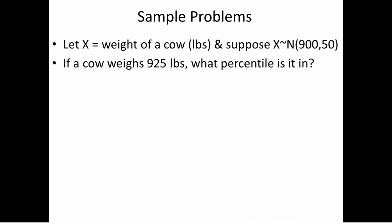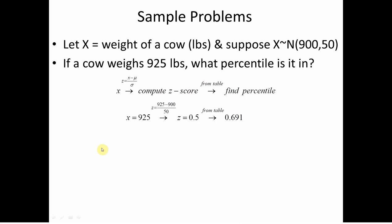Let's look at a sample problem. Suppose the random variable is the weight of a cow in pounds, normally distributed with mean 900 and standard deviation 50. If a cow weighs 925 pounds, what percentile is it in? We compute the z-score: 925 minus 900 divided by 50 equals 0.5. We go to the table and find this is in the 69.1st percentile — roughly the 69th percentile.